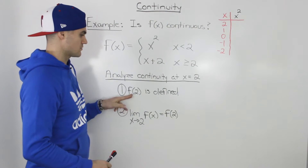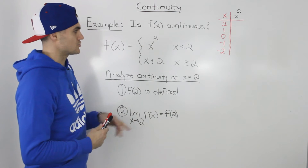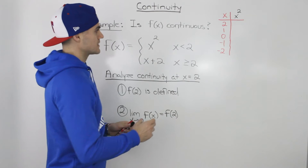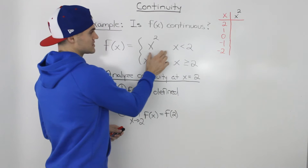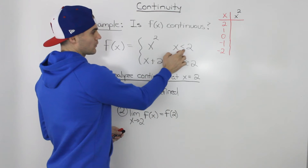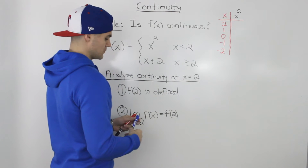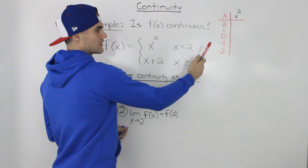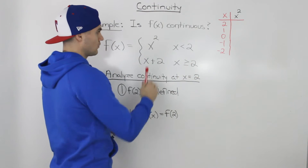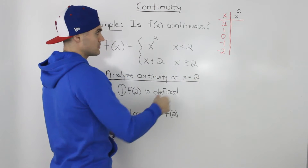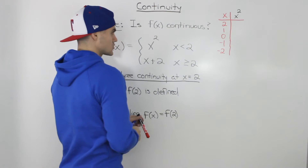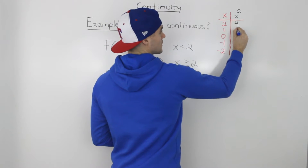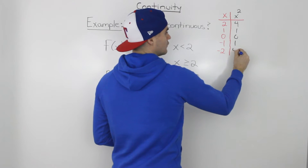My suggestion to prove these two conditions is to draw a graph of this piecewise function. Let's make a table of values for x squared when x is less than 2. We pick x equals 2 and a couple of x values less than 2. The y values are: 2 squared is 4, 1 squared is 1, 0 squared is 0.